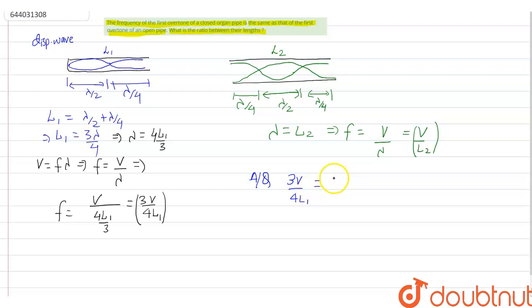the frequency of open organ pipe V upon L2. So you can cancel V and V here because the speed of wave in two cases will be same. So you can calculate the value of L1 upon L2